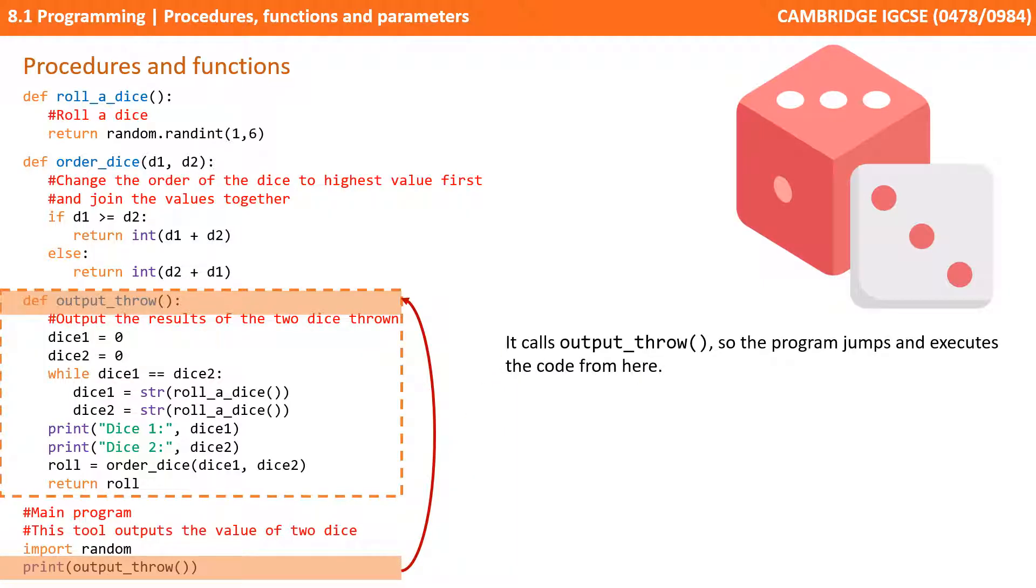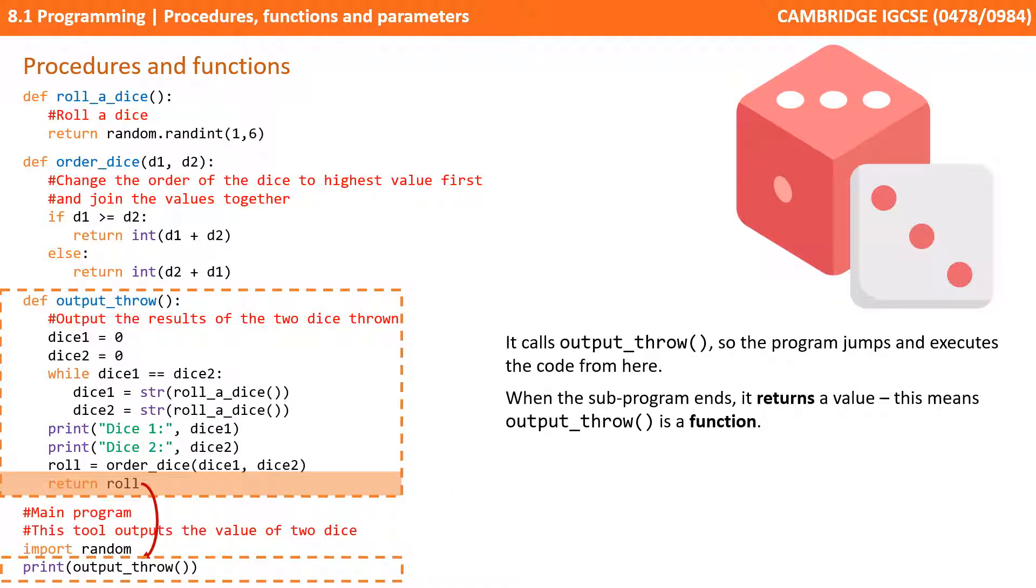The very first line calls output_throw. So the program jumps and executes the code from the line that says def output_throw which is the start of the subroutine. When the subprogram ends it returns a value and that's the roll. This means output_throw is a function because it returns a value.